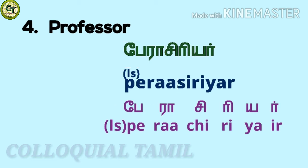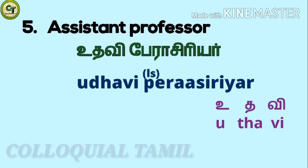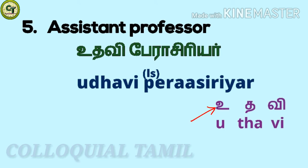For assistant professor: 'udhavi pair a siri air.' You already know 'pera siri air.' For 'udhavi': 'u' a short zone vowel, 'th' a short zone letter, 'vi' a short zone letter together: 'u the vi' - udhavi.